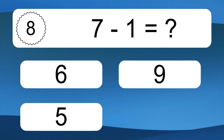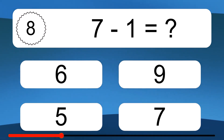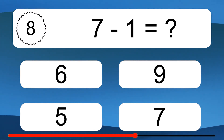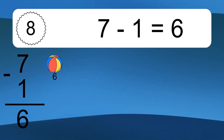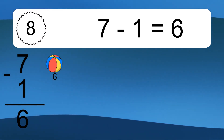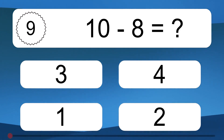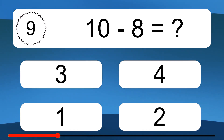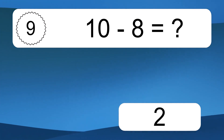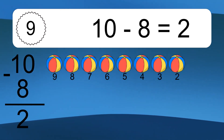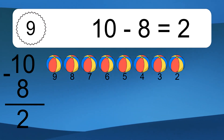7 minus 1 equals what? 7 minus 1 equals 6. Let's count it: 6. 10 minus 8 equals what? 10 minus 8 equals 2. Let's count it: 9, 8, 7, 6, 5, 4, 3, 2.